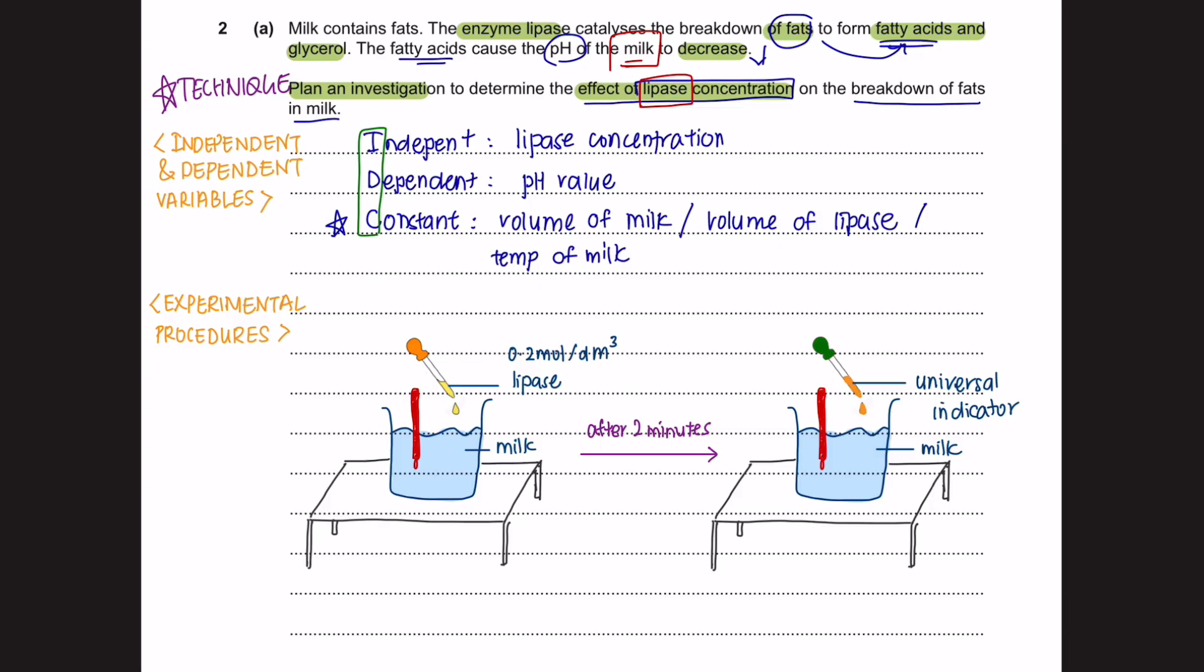Once you have listed down your variables and understand the experimental procedures, you can start writing down the points. You should always suggest an appropriate number and range of values for the independent variable. In your dependent variable, you have said that we are going to look for pH value. So make sure you include how you are going to measure the pH value, which is by using a universal indicator. Okay, let's write down that first.